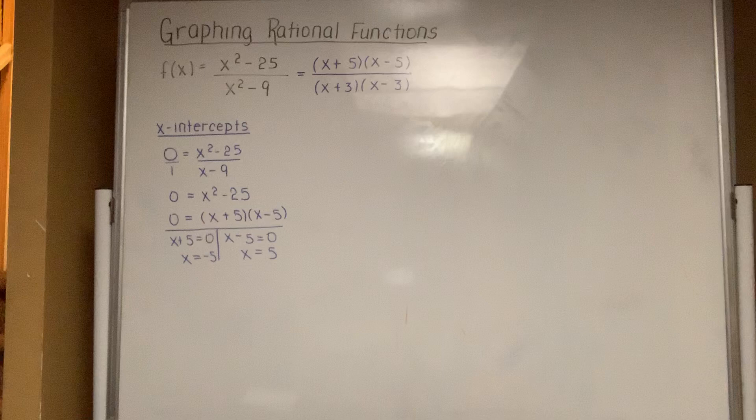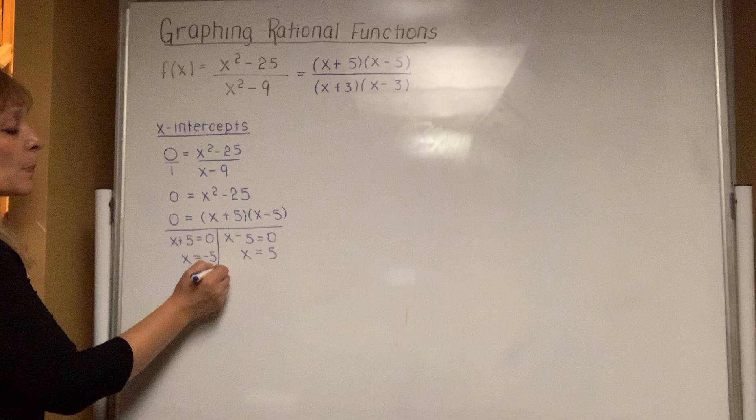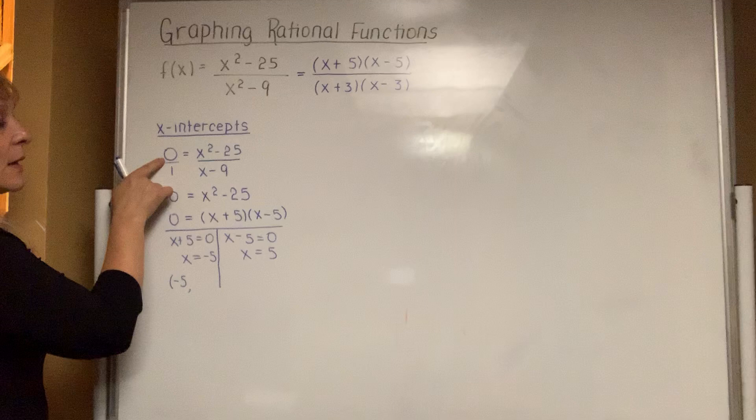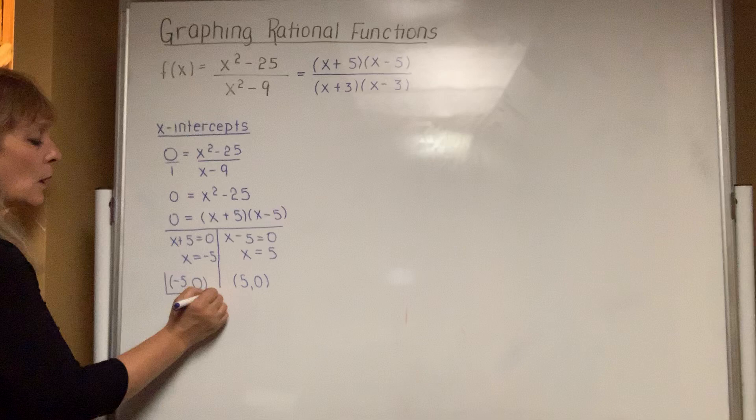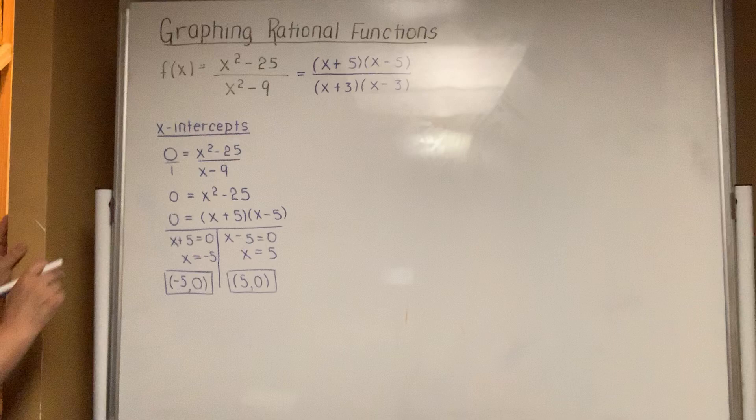When the question asks for x-intercepts, write them down as points. When the x value is negative 5, the y value is zero. When the x value is 5, the y value is zero. So you actually have two x-intercepts: one is at negative 5, zero, and the other is at 5, zero.